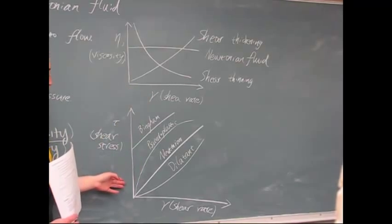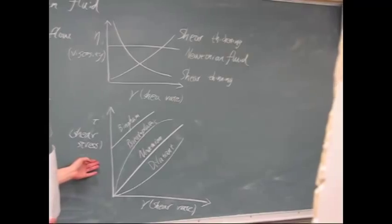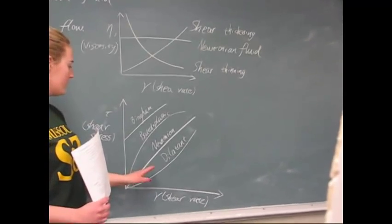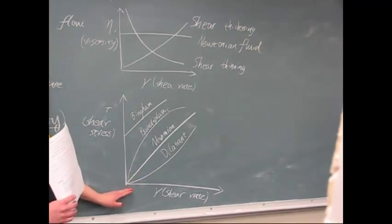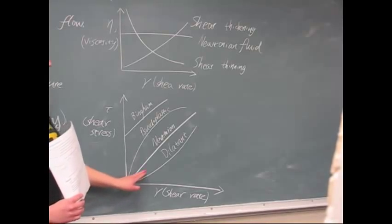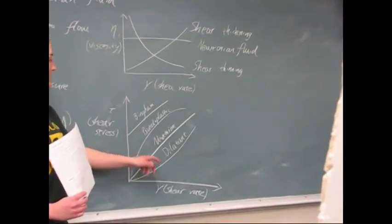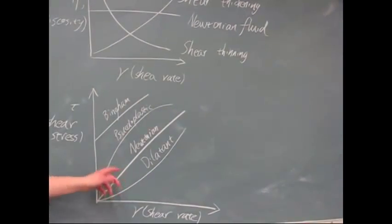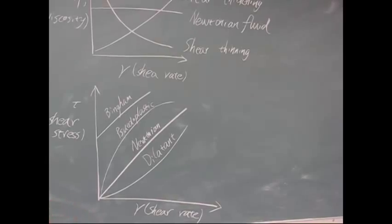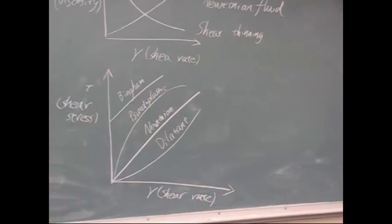In this graph, we have shear rate versus shear stress. And as you can see, Newtonian 1 crosses the y-axis at zero and also has a constant slope. The other three different kinds either do not have a constant slope or do not cross the y-intercept at y equals zero.